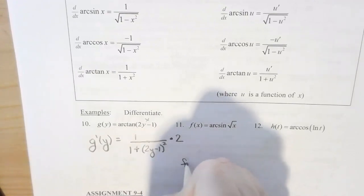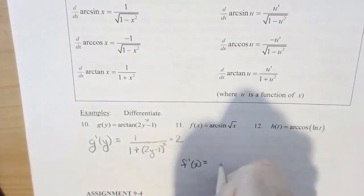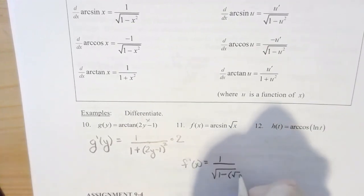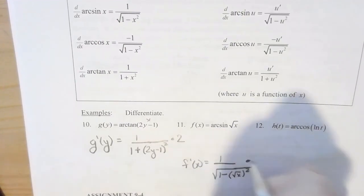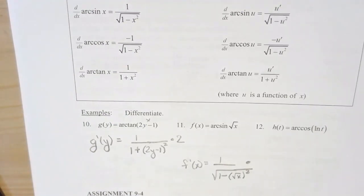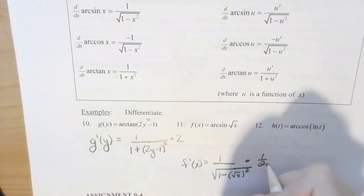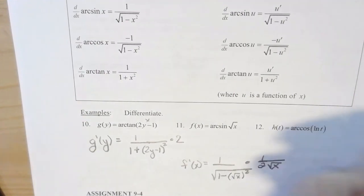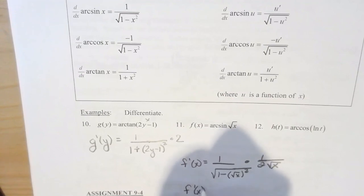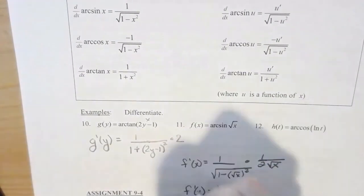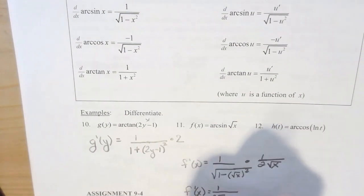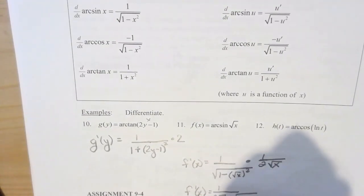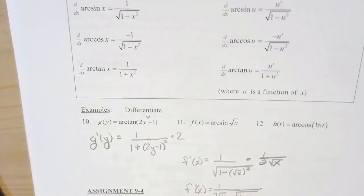For example 11, f prime of x: arc sine formula is 1 over √(1 − u²) times the derivative of the inside. Here u equals √x, so it's 1 over √(1 − (√x)²) times the derivative of √x, which is 1/(2√x). Putting it together: f prime of x equals 1 over (2√x · √(1 − x)), since (√x)² equals x.